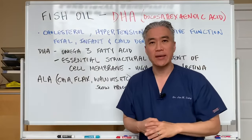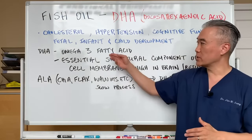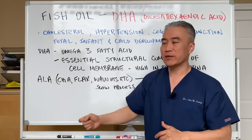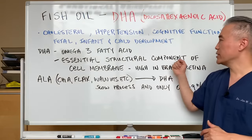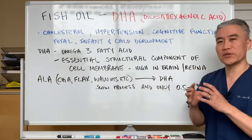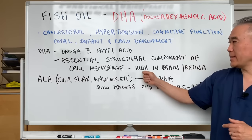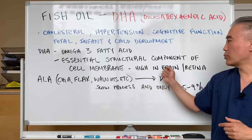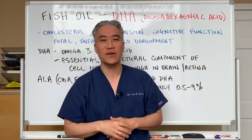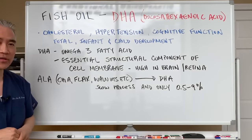DHA is an omega-3 fatty acid — the other component being EPA. DHA is essential for structural components of the cell membrane, meaning it's very important for your cells to function properly. DHA is found in very high concentrations in the brain and in the retina, making it very important for cognitive function, brain development, and eye health.